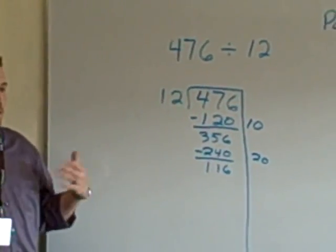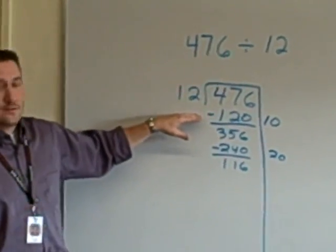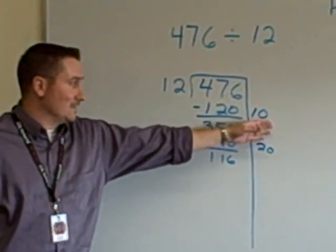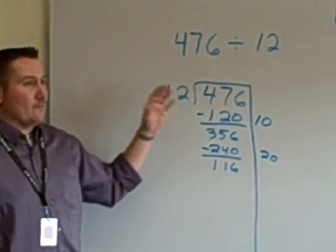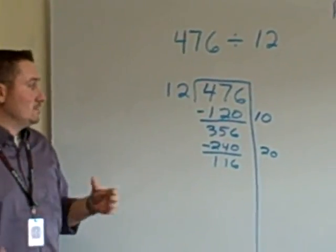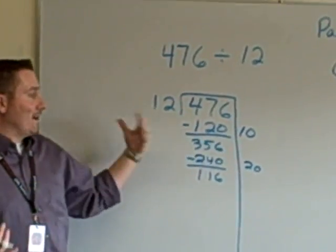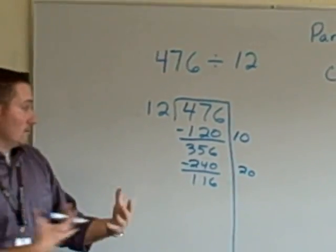Now, the thinking process, of course, is they already did 10, 10s are nice, and that's 120. 116 is less than 120, so they can't do that nice 10. They could do 9 here, that would be okay, but then they'd have to figure out, okay, what is 9 times 12? But an easier way might be to say, well, 10 times 12 is 120. Half of 10 is 5, half of 120 is 60, using their number sense.